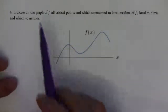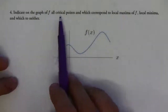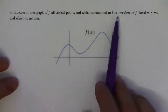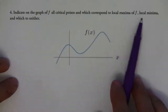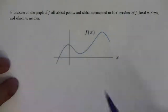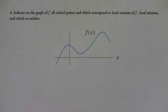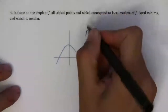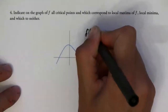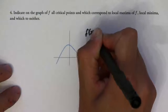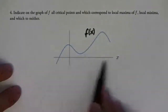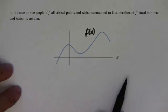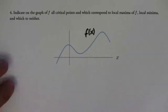This question says to indicate on the graph of f all critical points and which correspond to local maxima, local minima, and which to neither. This is f of x, the original function. Later on we're going to answer the same exact question but with the derivative and then the second derivative, so that we can make the connection between all of the different kinds of functions.